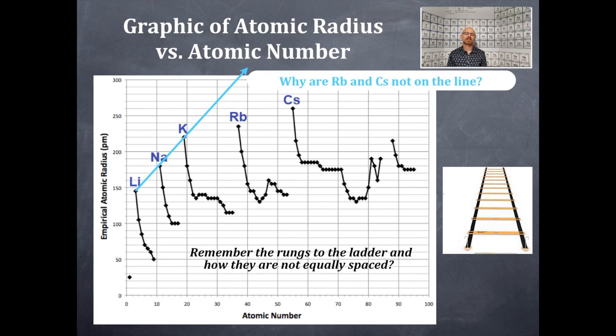I'm hoping that you remember way back into atomic structure that the rungs to the ladder are not equal distant. The yellow sections of this ladder are the rungs to the ladder. The black sections are the rails to the ladder.